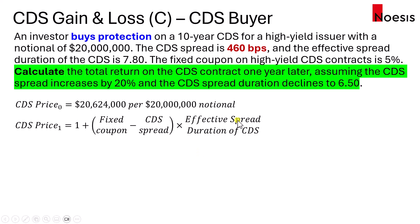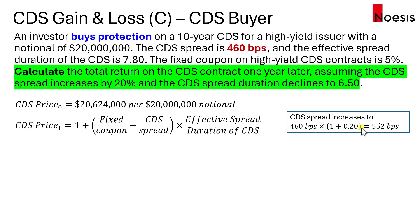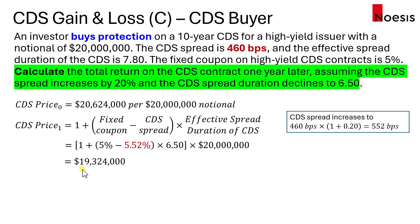Moving on — let's fast forward to one year later. We need to calculate the total return on the CDS contract one year later, assuming the CDS spread increases by 20% — note this is a proportionate increase — and the CDS spread duration declines to 6.5 after one year. The CDS spread would be 460 basis points multiplied by 1.2, giving 552 basis points. Substituting 5.52% and effective spread duration of 6.5, we get $19,324,000.